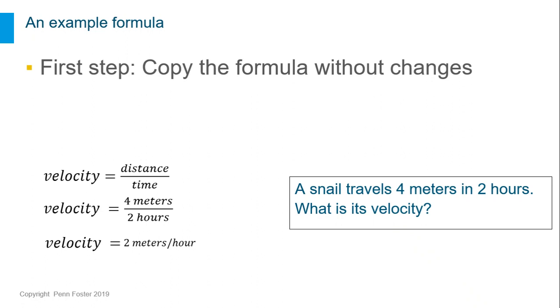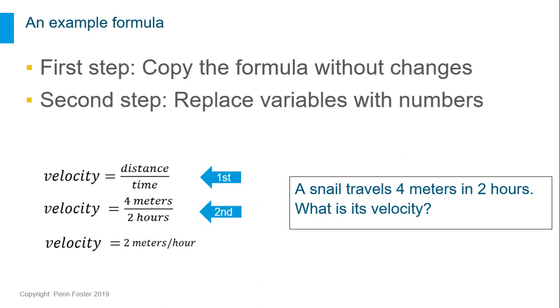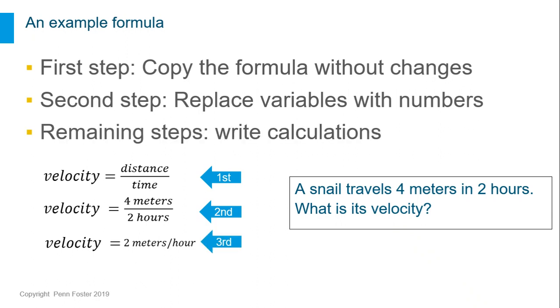The best way to keep from getting the operations mixed up is to start with a first step of writing the formula without changing anything. Then, as your second step, write the formula again, replacing the variables with numbers from the problem. Continue on writing a new line for each step.